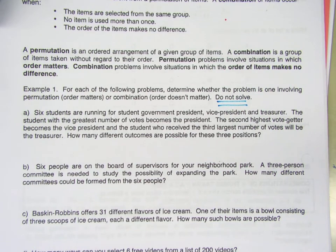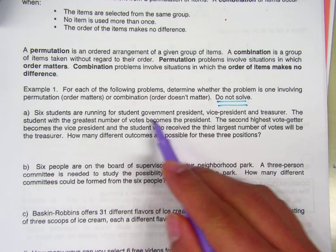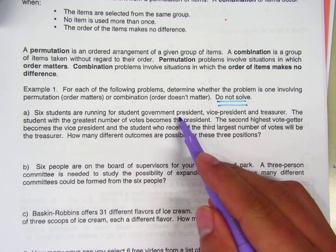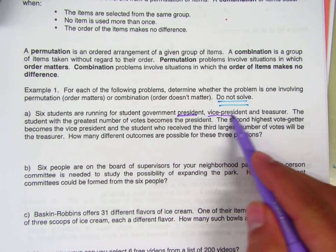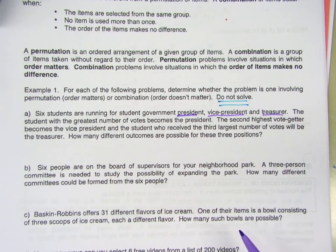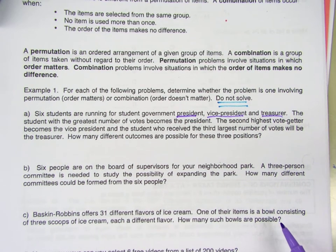First problem: we have six students running for student government—one is going to be president, one is vice president, one is treasurer. The student with the greatest number of votes becomes the president, the second highest and so on.